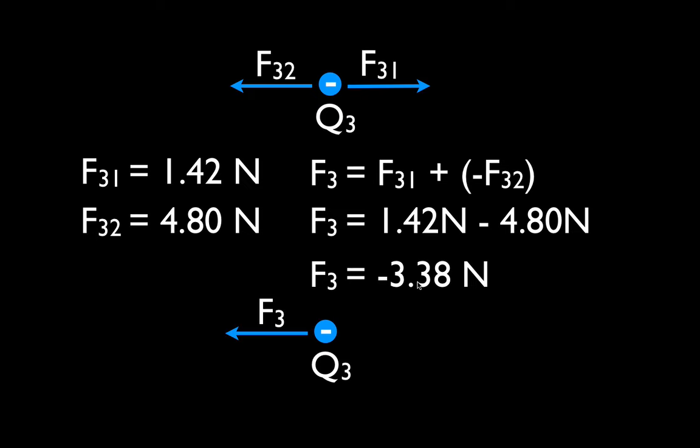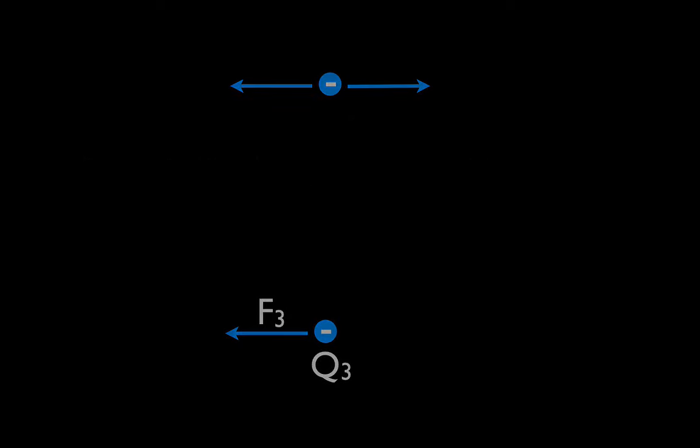That was pretty straightforward. Make sure you determine the directions of the forces first, then use Coulomb's law to calculate the magnitudes — leave the negative signs out, convert to coulombs, square the distance, and then you come up with your answer. Keep everything straight and don't lose your negative signs and it works out pretty easily. Thank you very much for watching — I hope you found that video helpful. Give me a thumbs up or a comment below, and we'll see you in the next video.